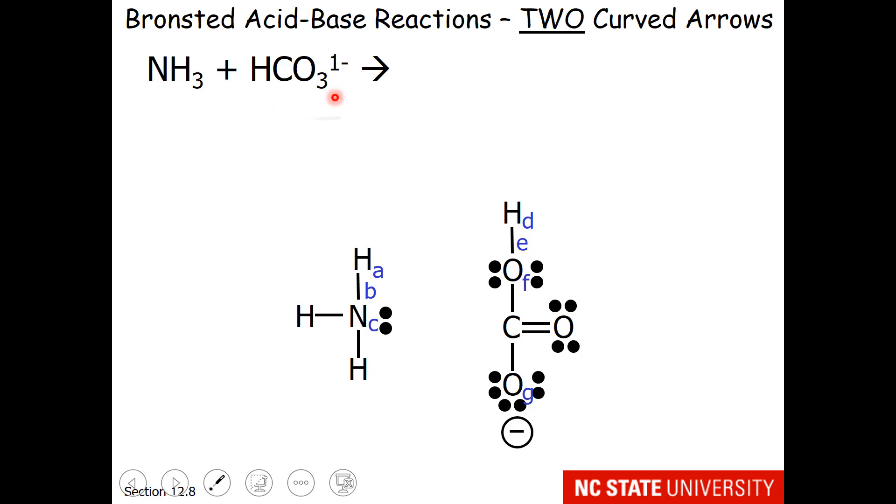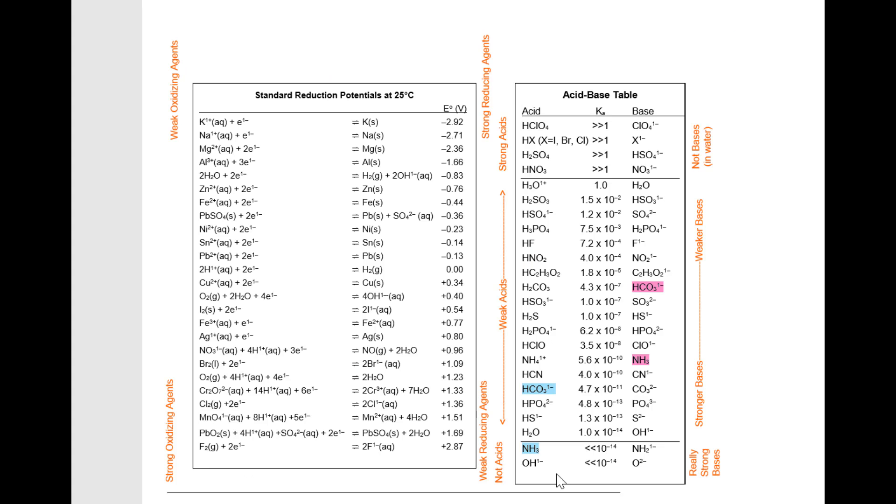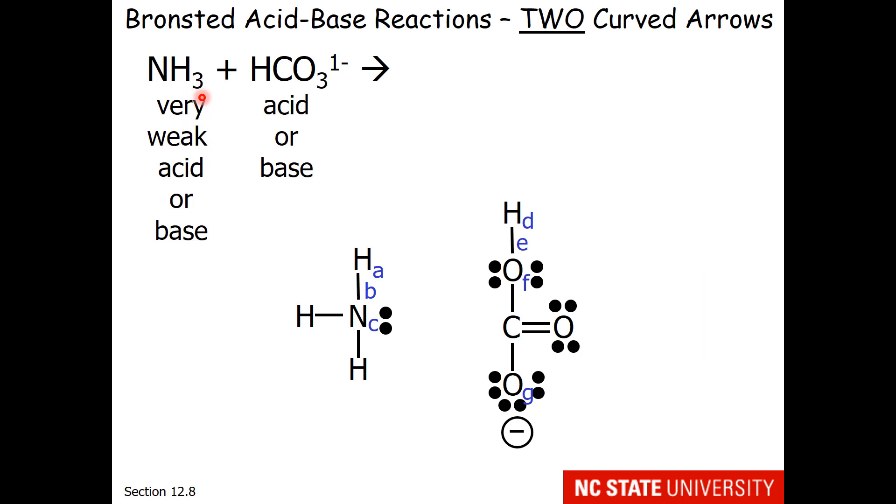So let's look up ammonia and hydrogen carbonate on our acid base table. Both materials are in both the acid column and the base column, but what we can see is that hydrogen carbonate is a stronger acid than the ammonia, and ammonia is a stronger base than the hydrogen carbonate. So it makes sense to assign the hydrogen carbonate as our acid and the ammonia as our base. So I've noted this here under each material. Ammonia is a very weak acid, or it can be a base. Hydrogen carbonate is amphiprotic, so it can be an acid or a base. But our assignments are that ammonia is a better base, and hydrogen carbonate is a better acid.